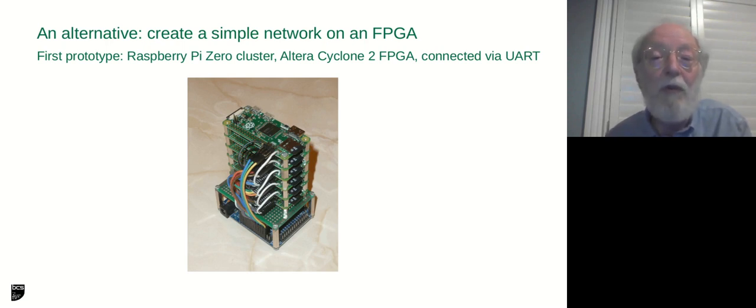So the first prototype, which some of you may have seen before, was a cluster of Raspberry Pi Zeros, which don't even have Ethernet, and an FPGA, an Altera Cyclone 2, which I bought from China off eBay for about £12. The Raspberry Pi Zeros cost £4.50, I think. So this cluster of six CPUs, the whole thing is something like £50 of expense, which may well be the world's cheapest micro or pico supercomputer cluster.